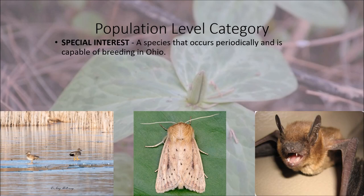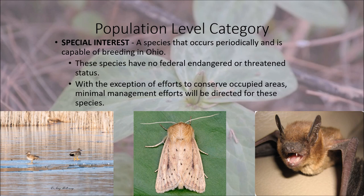The first population level category is species of special interest — a species that occurs periodically and is capable of breeding in Ohio. These species have no federal endangered or threatened status, so they're basically not really protected. With the exception of efforts to conserve occupied areas, minimal management efforts will be directed for these species. It's basically where they're able to grab a piece of land and protect their habitats.